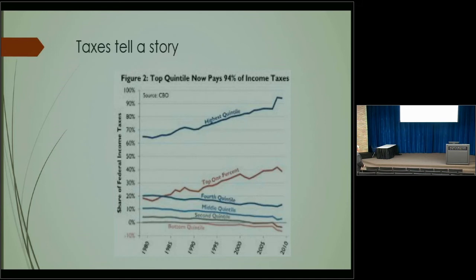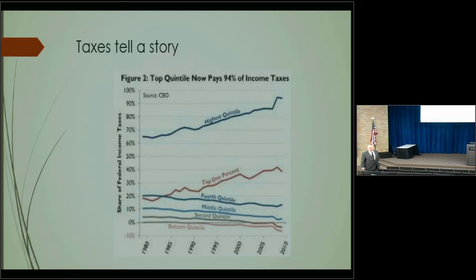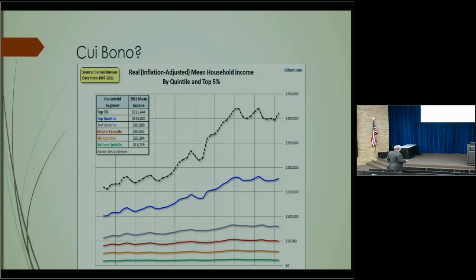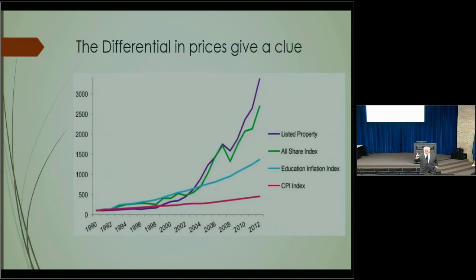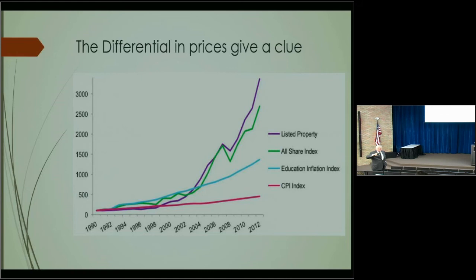Taxes tell a story — the people with the money are paying the taxes. The highest quintile pays about 70 percent of taxes because they have the money. The inflation-adjusted household income is flat at the bottom and increasing at the top. When you increase the money supply it affects everything in the economy differently — money supply flows from the Fed into the banking system, mortgages increase demand in housing, pushing up house prices.